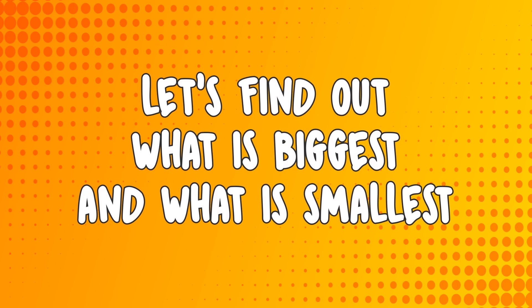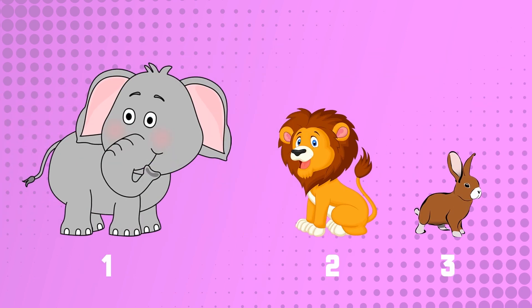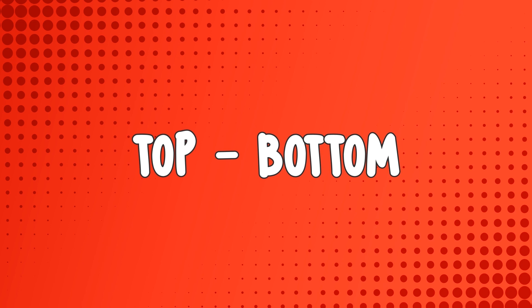From these three trees, which is biggest? Yes, this second tree is biggest. Now from these three animals, which is the smallest? Yes, this third rabbit is smallest.